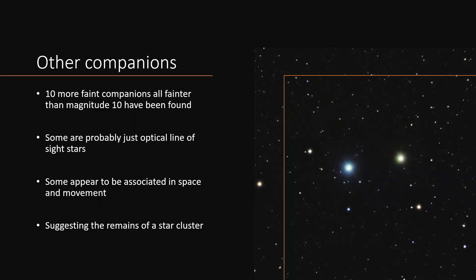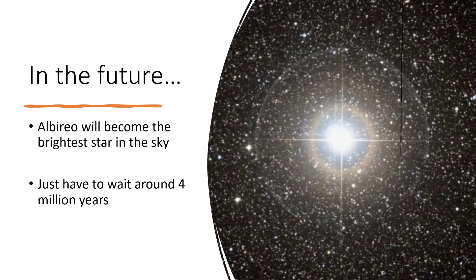And as I said, they are coming towards us. We can tell from their overall Doppler shift and the radial velocity measurements that they're heading our way. It's not going to be a collision, but in the future, the Albireo star system will become the brightest star in the sky. You just have to wait about four million years for that to happen. So sadly, we won't see it.